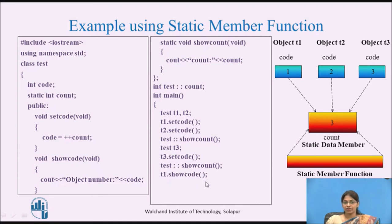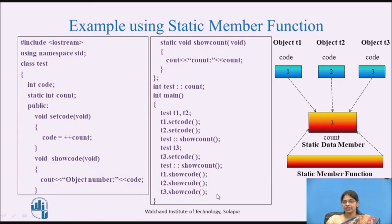Object t1 invokes showCode, displaying code value 1 as the object number. Object t2 invokes showCode, displaying code value 2 as the object number. Similarly, object t3 invokes showCode, displaying code value 3 as the object number. This illustrates how static data members are accessed by static member functions.